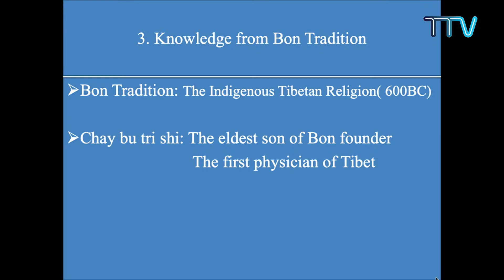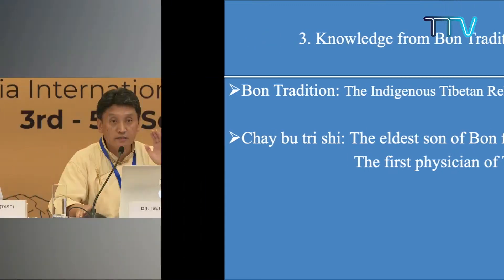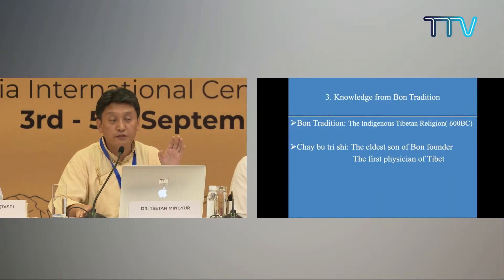The third aspect of the origin of Tibetan medicine is based on the knowledge of the Bon tradition, which existed around 600 BC before the establishment of Buddhism in Tibet. The first physician of Tibet is considered to be the eldest son of the Bon founder, Dambashirob. His eldest son, Chebuthishi, is considered the first physician of Tibet, and there were separate medical practices before the flourishing of Buddhism in Tibet.